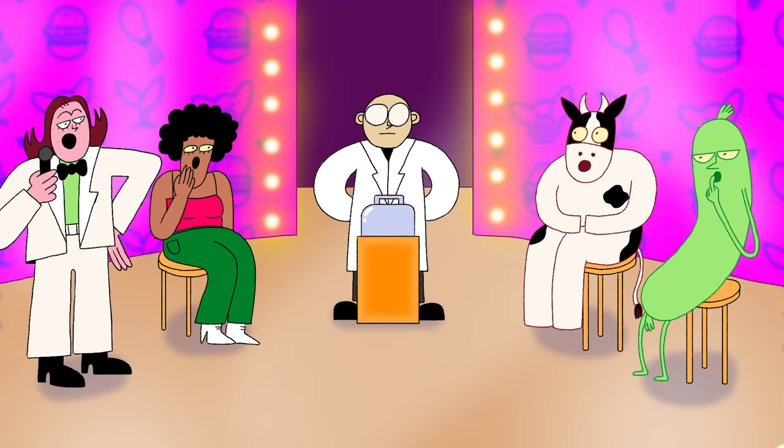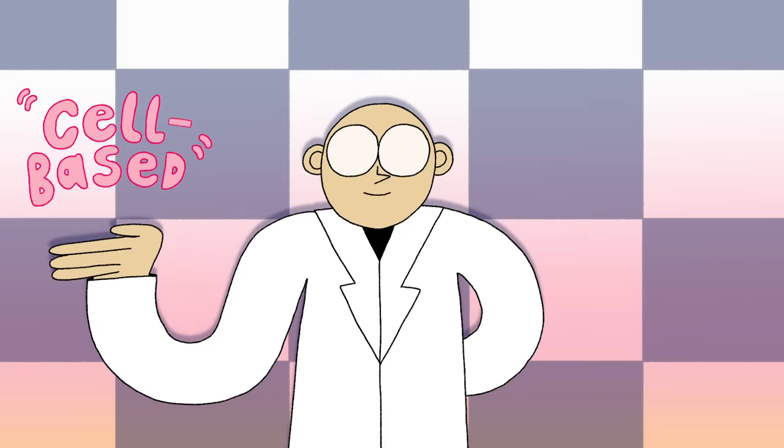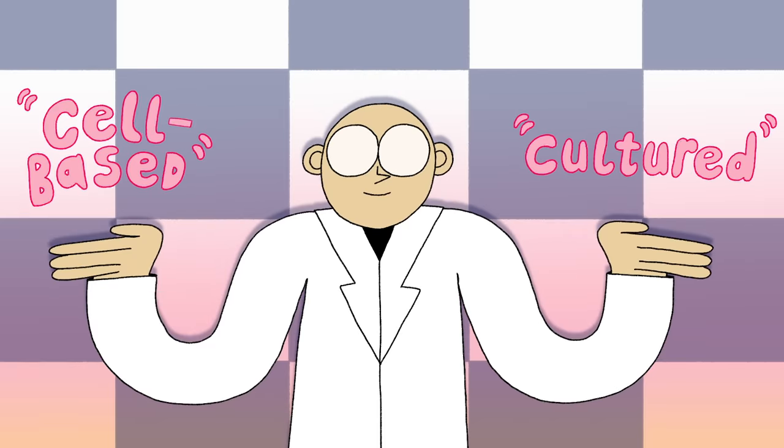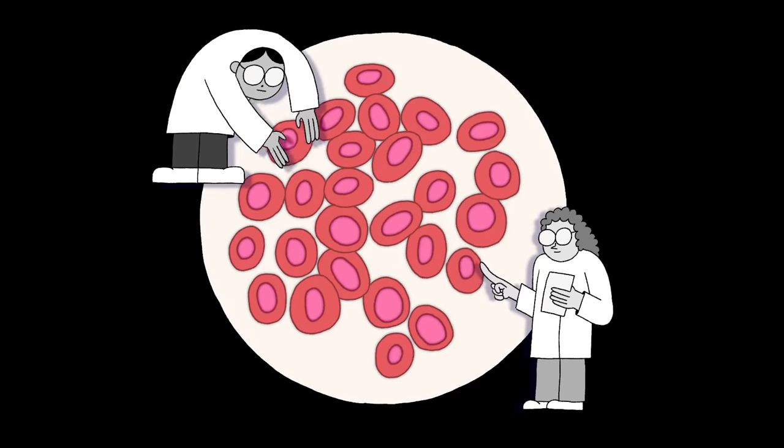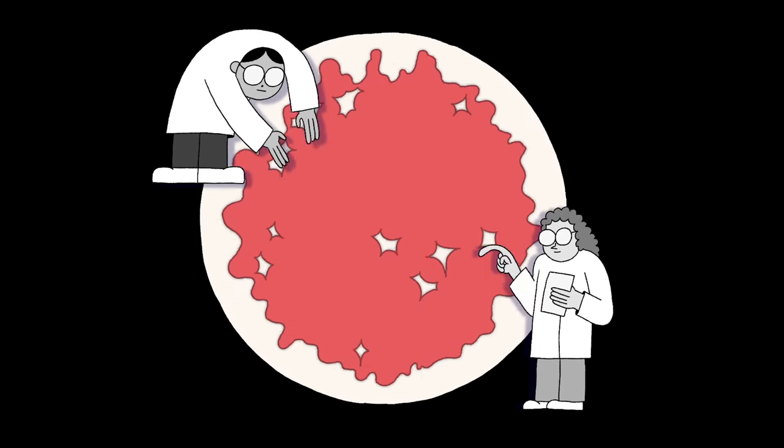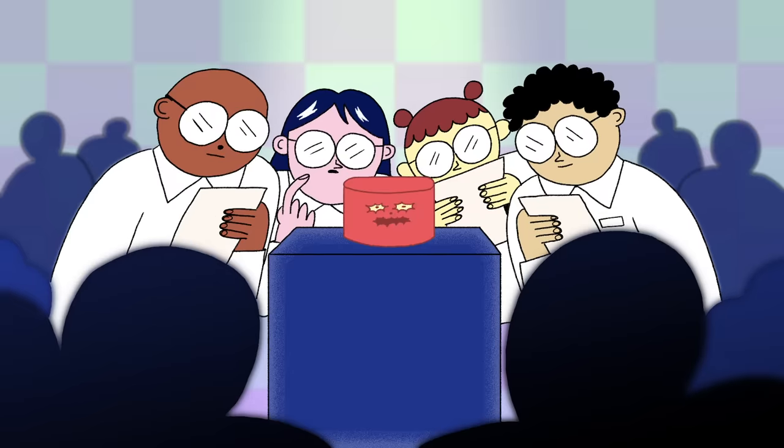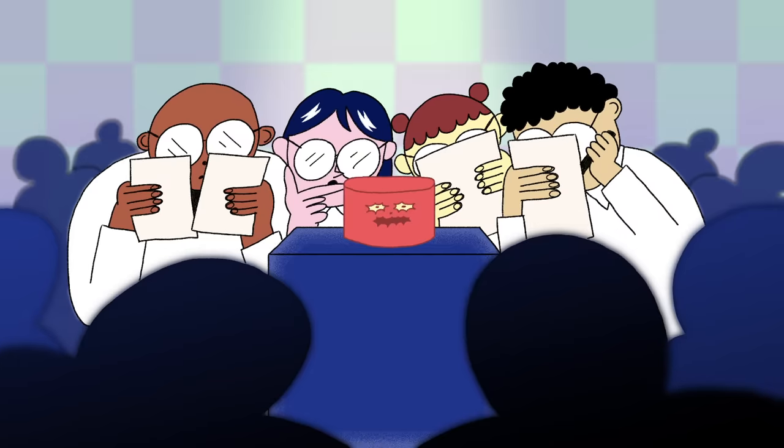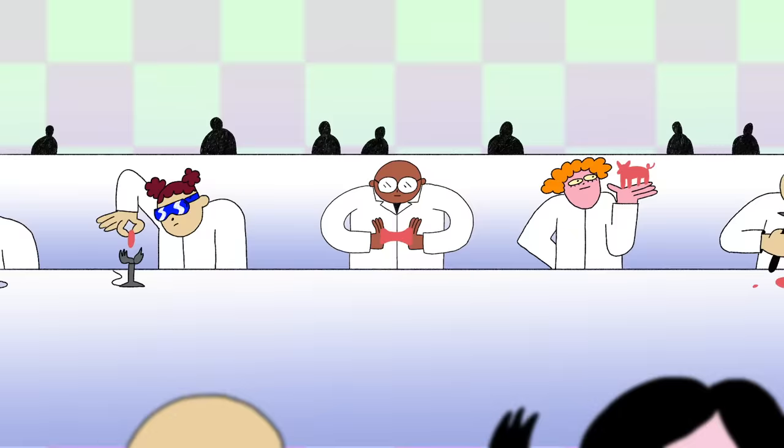Finally, our last entrant, lab-grown meat. Also known as cell-based meat and cultured meat, these products begin as animal stem cells that researchers coax to multiply and form into muscle. It's worth noting that lab-grown meats are largely still in development. So the exact process may change when they're produced at greater commercial scale.